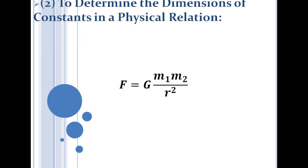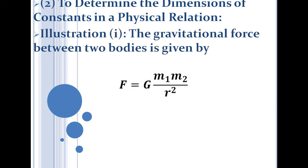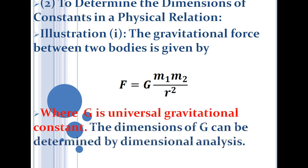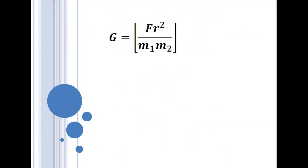The second application of dimensional analysis is that we can determine the dimensions of physical constants in a given physical relation. Let us find the dimension of the universal gravitational constant G in Newton's law of gravitation: F = Gm₁m₂/r², where F is the gravitational force, G is the universal gravitational constant, m₁ and m₂ are the masses of the two bodies, and r is the distance between their centers. Rearranging: G = F·r²/(m₁·m₂).